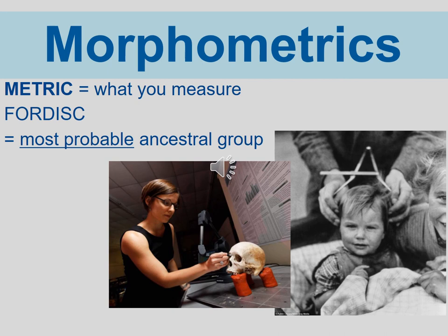There's a program called FORDISC, from the Forensic Data Bank created at the University of Tennessee in Knoxville — the same place where the first body farm was started under Bill Bass. You plug those measurements in and it gives you output. The good thing about morphometrics as opposed to morphoscopics is that morphometrics seem a little more objective, a little more unbiased, and they're not categorical.